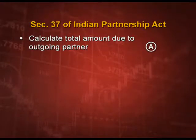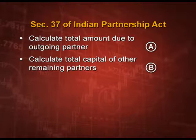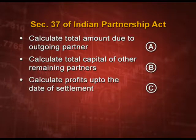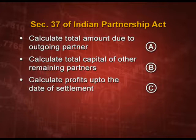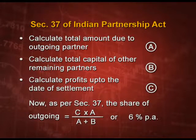To understand section 37 of the Indian Partnership Act: calculate total amount due to the outgoing partner — call it A. Calculate total capital of all remaining partners — call it B. Calculate profit up to the date of settlement — call it C. The formula as per section 37 is: C × A / (A + B). To simplify: C is the profit, A is that partner's share, and A + B is the total of all partners' capital taken together.